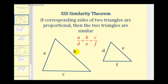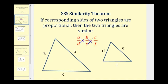To show that two triangles are similar by side-side-side similarity, there are two ways to verify the proportion. One way is to simplify each ratio and make sure they are equal. Alternatively, you can cross-multiply to check that cross-products are equal: a times e must equal b times d, b times f must equal c times e, and a times f must equal c times d.